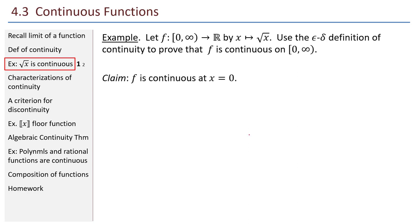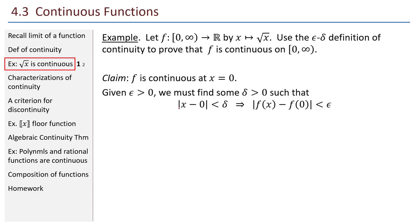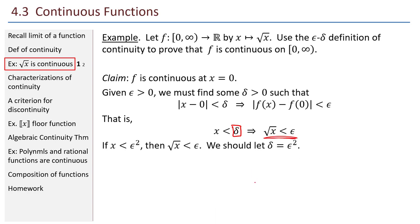Claim: F is continuous at X equals zero. Given epsilon greater than zero, we must find some delta greater than zero such that absolute value of X minus zero less than delta implies absolute value of F of X minus F of zero is less than epsilon. Cleaning up algebraically, we need: whenever X is less than delta, the square root of X is less than epsilon. With a little thought, if X is less than epsilon squared, then square root of X is less than epsilon. So we should let delta equal epsilon squared.